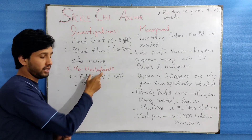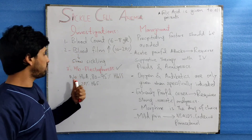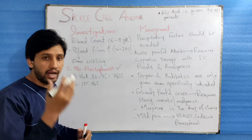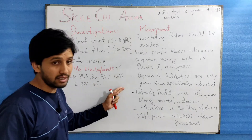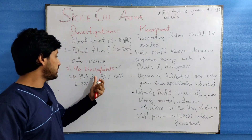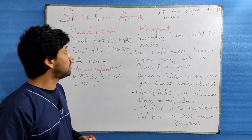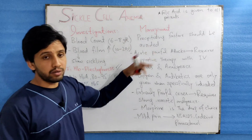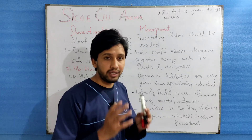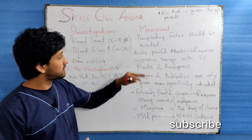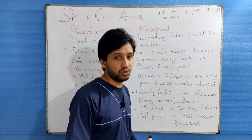Hemoglobin electrophoresis is very important as it confirms the diagnosis. It shows no HbA, HbF levels slightly higher at 2 to 20%, and HbSS — the sickle cell hemoglobin — ranging between 80 to 95%, confirming sickle cell anemia. Regarding management, precipitating factors should be avoided and complications treated as early as possible.